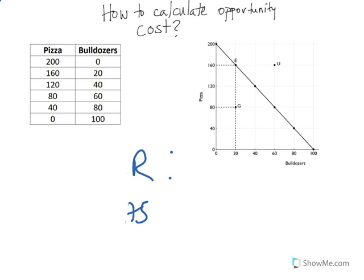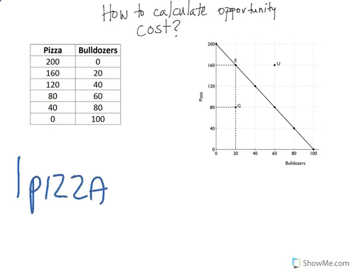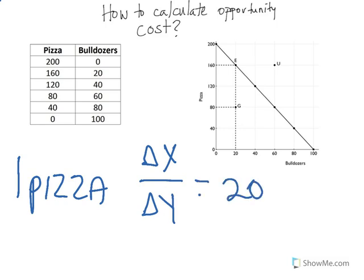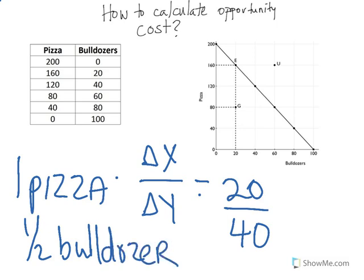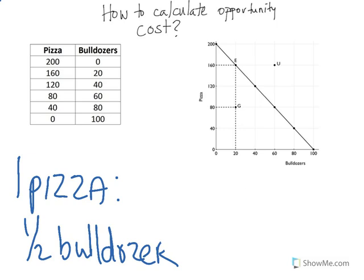Let's take this from the other angle and look at pizza — this is important for understanding comparative advantage and who should specialize in which product. If we were adding one pizza, how much would we lose? This is the change in X over the change in Y, so we get 20 over 40, which is one half of a bulldozer. As we gain one pizza, we lose or give up half a bulldozer.